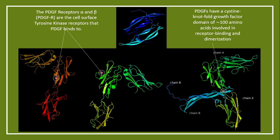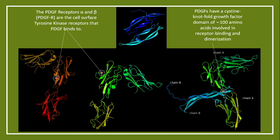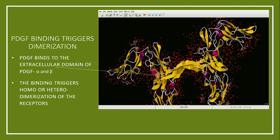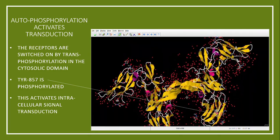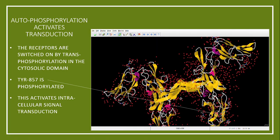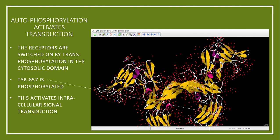PDGF binds due to a protein motif called the cysteine knot fold, characterized by three disulfide bridges, which helps it bind to the receptor and causes the receptors to dimerize. PDGF binds to the extracellular domain of the PDGF alpha and beta receptors, triggering homo- or heterodimerization of the receptors, as shown to the right of your screen. The intracellular signal transduction cascade is then initiated by phosphorylation of the tyrosine 857 residue on one receptor monomer via transphosphorylation.